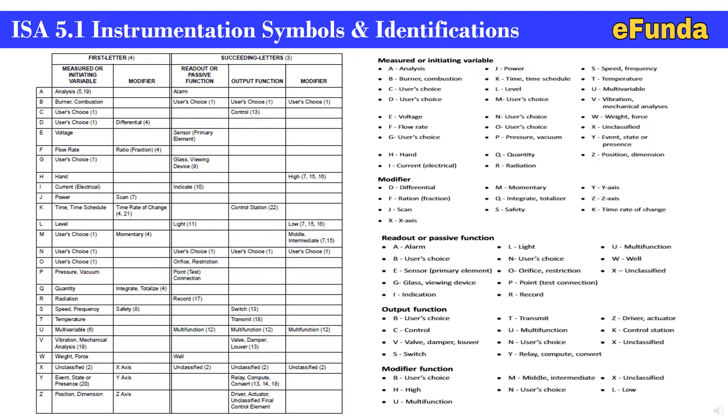One can see the table where A, B, C, D, E, F, G, H, I, J, K, L, M, N, O, P, Q, R, S, T, U, V, W, X, Y, Z - the alphabets are covered and for each alphabet the designations are indicated. Please go through the table, and for simplicity we have also additionally attached an extract where one can read through all these measured or initiating variables and associated variables for the modifier, readout or passive function, output function and modification.